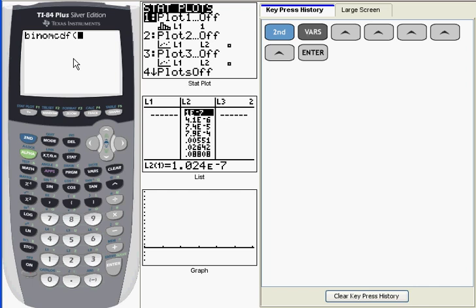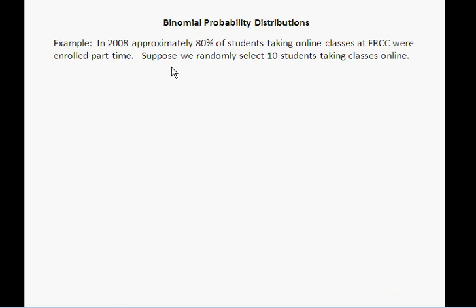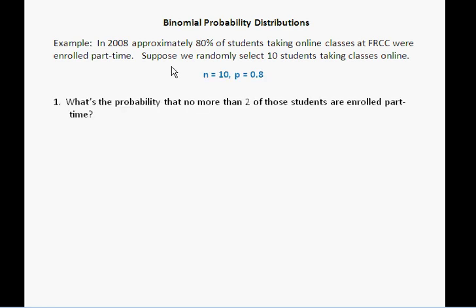To show you how it works, I'm going to first do an example that I demonstrated in the binomial PDF video. And you'll recall the setup was this: In 2008, among students taking classes primarily online at Front Range Community College, 80% of them were enrolled part-time. And then we take a random sample of 10 students taking classes online. And the question we're asked is this: What's the probability that no more than 2 of those students are enrolled part-time?